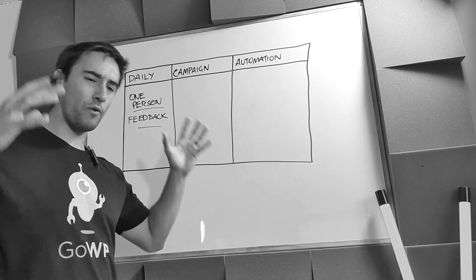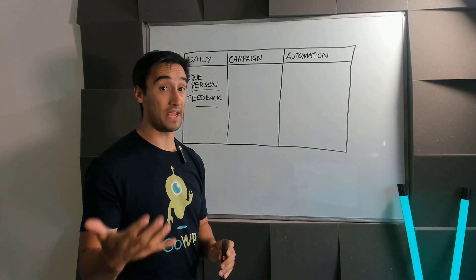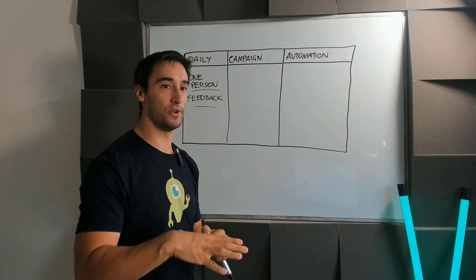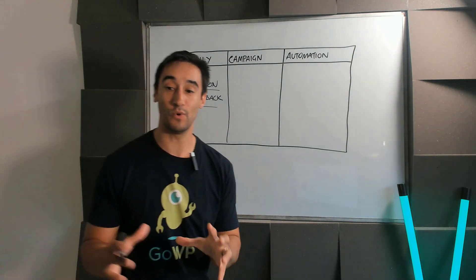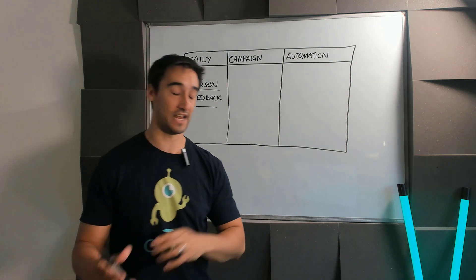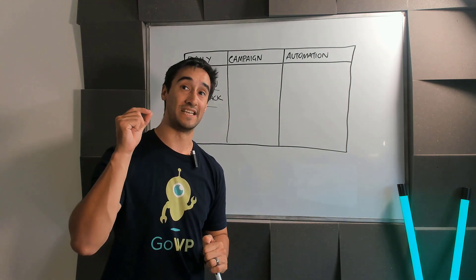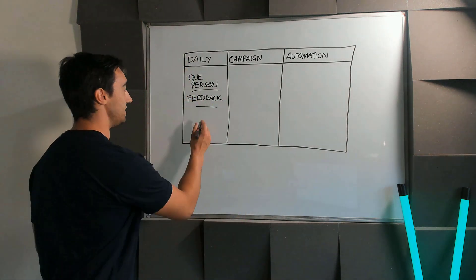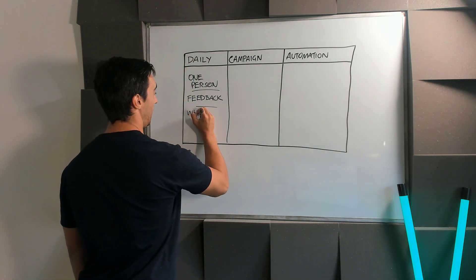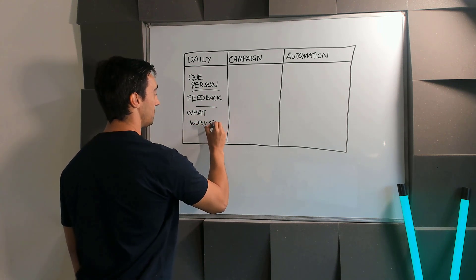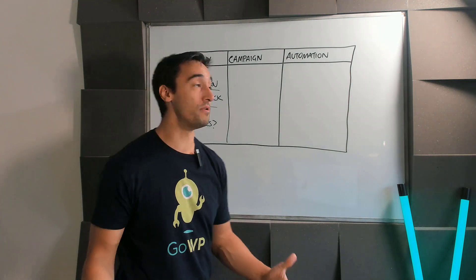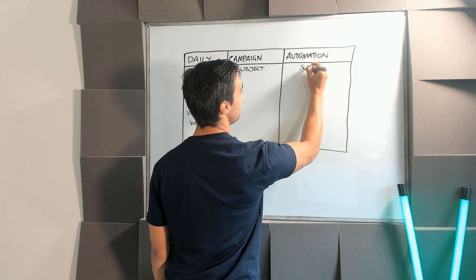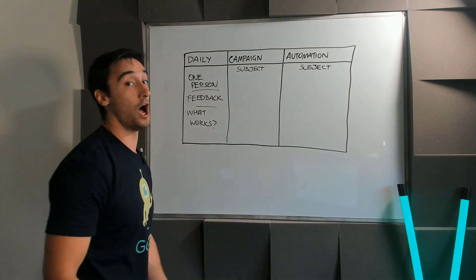This allows me to take segments of my market and think about what would be super useful for them right now — whether it's an offer, a product, a service, or some training. Even if you've only got a list of 10 people, get into the habit of sending a daily email. If you send 10 emails and one subject line has a crazy high open rate, that subject line should then be going into your campaigns and automations.